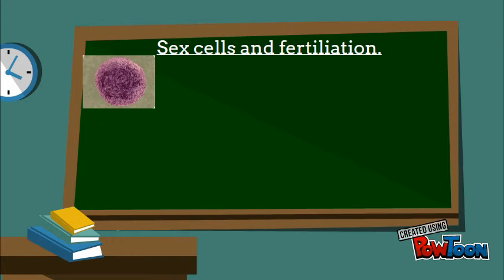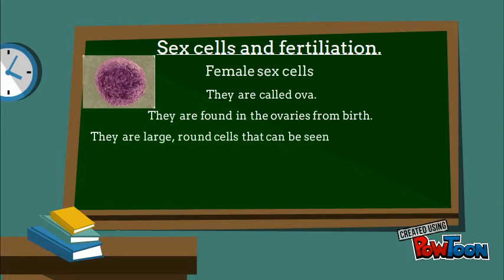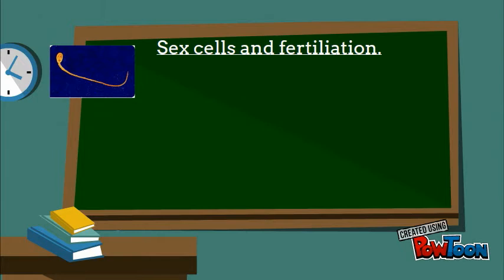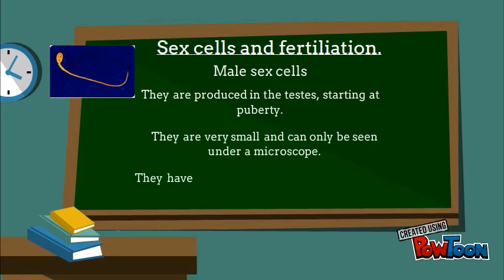Sex cells and fertilization. Female sex cells are called ova. They are found in the ovaries from birth, they are large round cells that can be seen with the naked eye, they contain all nutrients required for reproduction, and they mature during puberty. Male sex cells are produced in the testes starting at puberty. They are very small and can only be seen under a microscope. They have a small head and a long tail, which they use to move.